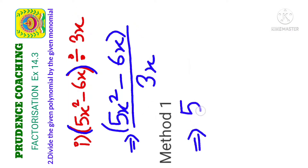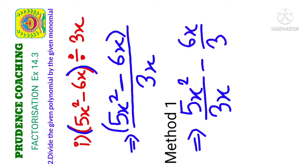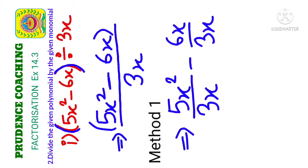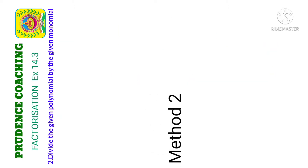In Method 1, write the first term 5x² divided by 3x, then the separator minus, then 6x divided by 3x. Now cancel: 5 and 3 have no common factor, but x cancels with one x in the denominator. For the second term, 6 and 3 cancel to give 2, and x cancels with x. So the final answer is 5x/3 minus 2.